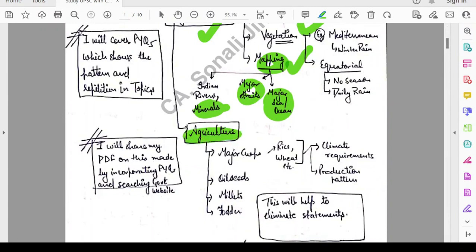Then, come to the topic agriculture. Here you need to see major crops, oilseeds, millets and fodder. Like for major crops, you need to see climate requirements for these crops, soil required for this crop and then production pattern of the country. You need to also see what is the pattern of India like whether we are importing such crop or exporting such crop. I will share my PDF on this that has been made by incorporating PYQs and searching government website of production pattern.